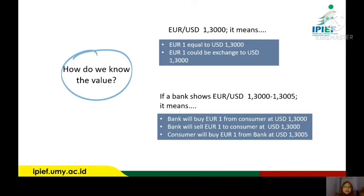If we find out how we know its value from the banks — if the bank shows that the euro per US dollar is around 1.3 US dollar, it means that the bank will buy 1 euro from the customer at 1.3 US dollar, and the bank will sell 1 euro to the customer at 1.3 US dollar as well.